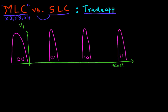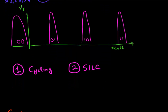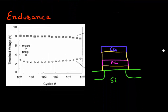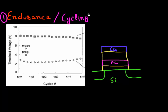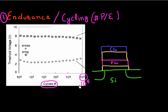To do that I need to introduce two new terms. One is called endurance, also called cycling. Cycling here has little relationship with what Lance Armstrong used to do. What cycling or endurance of a cell means is that each time you program or erase the cell, each of those operations is called a cycling operation. Typically for single level cells you have up to 10 to the power of 5 cycles — you can program or erase them 10^5 times.